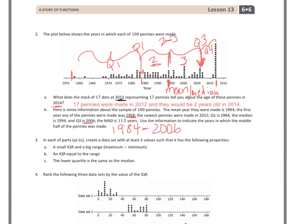So the middle half of the pennies were made between 1984 and 2006. That means the IQR is 22 years, because those are my two quartile medians — 2006 minus 1984 equals 22. Quartile 1 and Quartile 3 given in the problem are actually the lower and upper quartile medians, so subtracting them directly gives the IQR of 22 years.